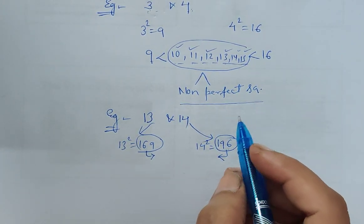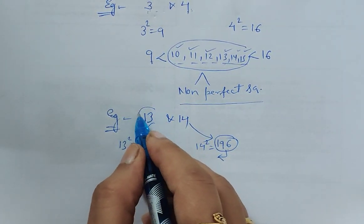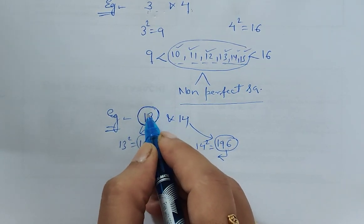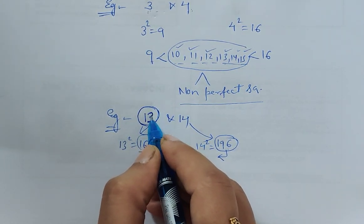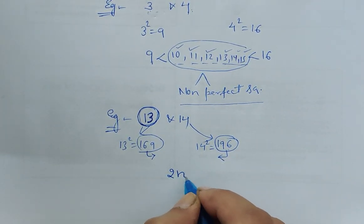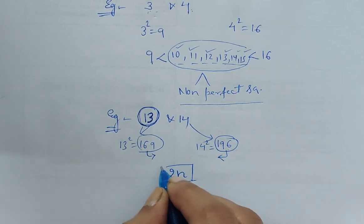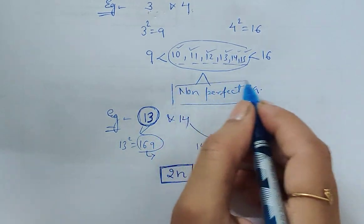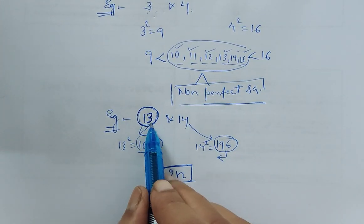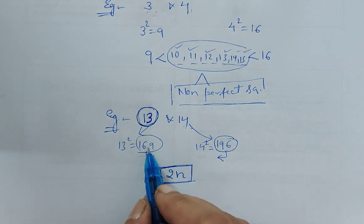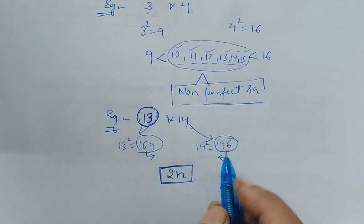What is that? Just look at the smallest consecutive number, 13. We just have to multiply this smallest consecutive number by 2. That is the property: 2n gives the number of non-perfect squares between the squares of these two consecutive natural numbers, 169 and 196.